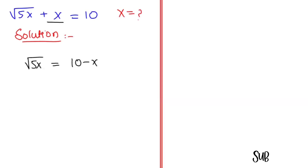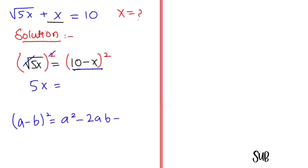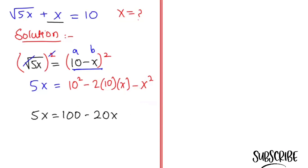Now I am going to raise both sides to the power of 2. Here the square root and the square get cancelled, so we get 5x on the left. On the right I am going to use the algebraic identity: (a minus b)² equals a² minus 2ab plus b². Here a is 10 and b is x. So we get 5x equals 100 minus 20x plus x².